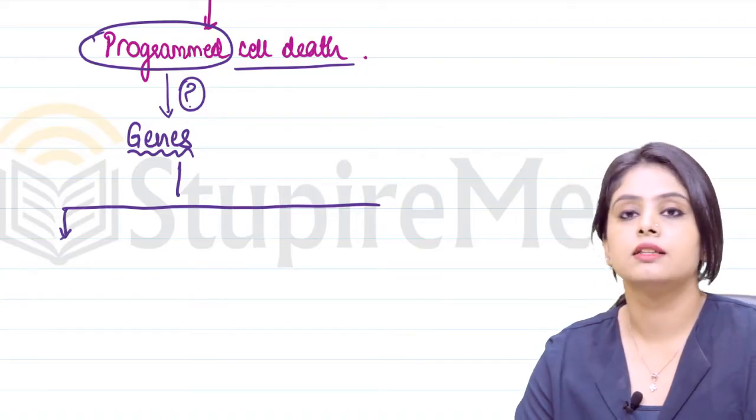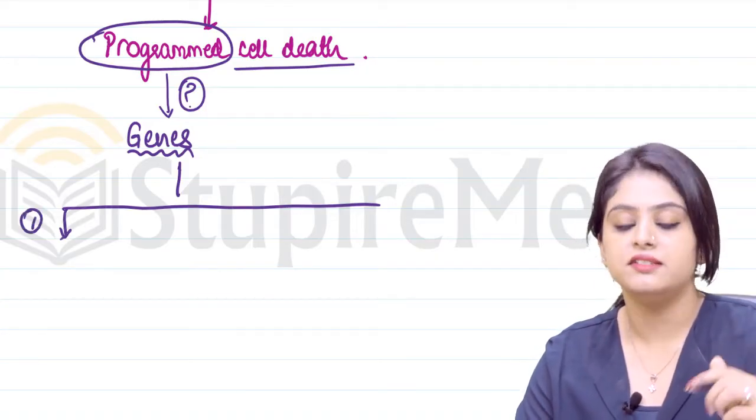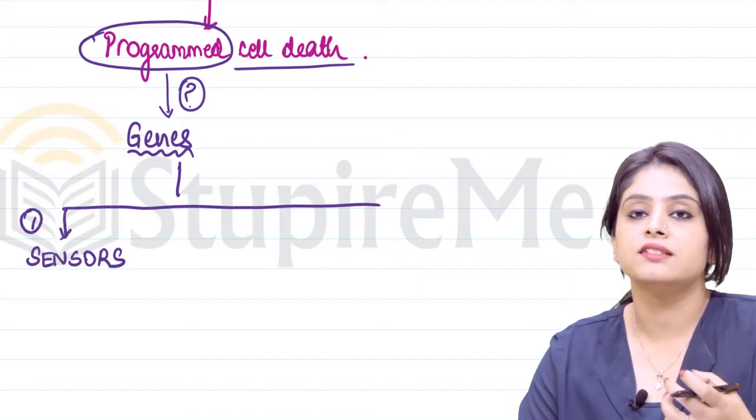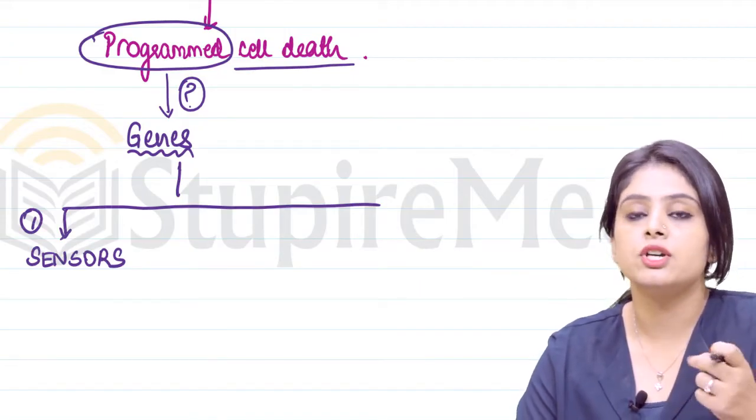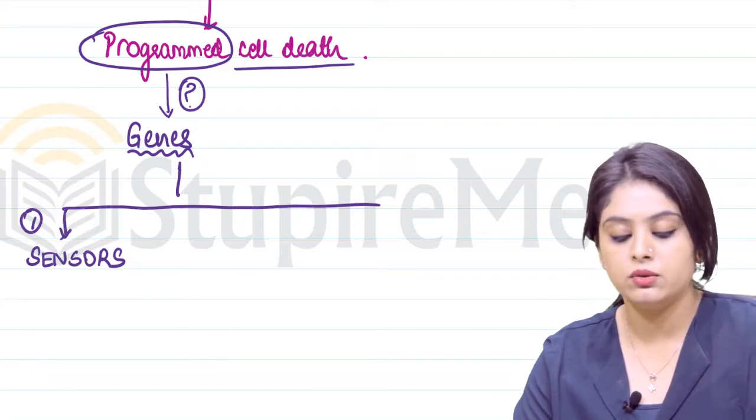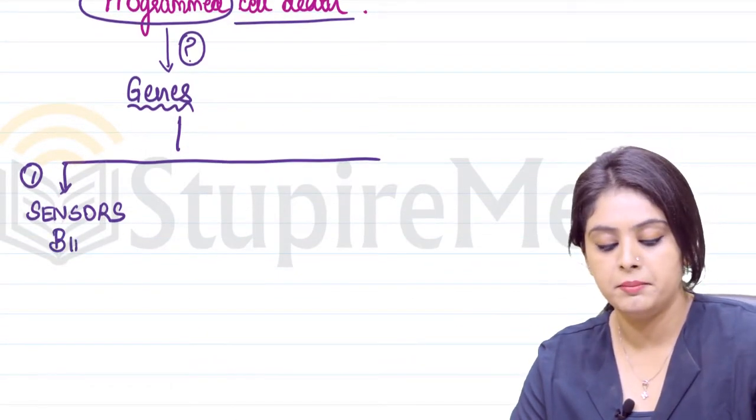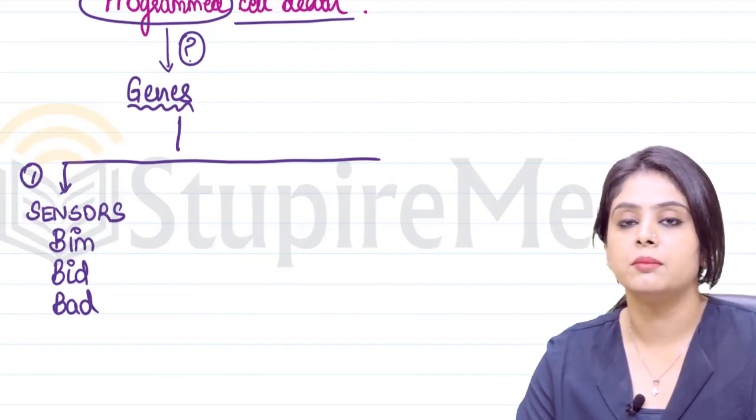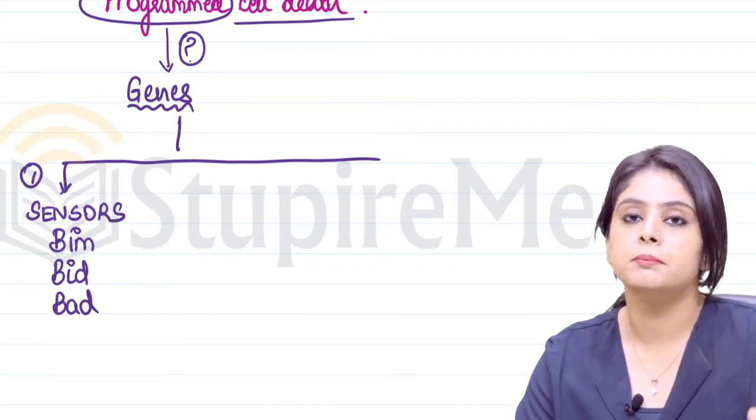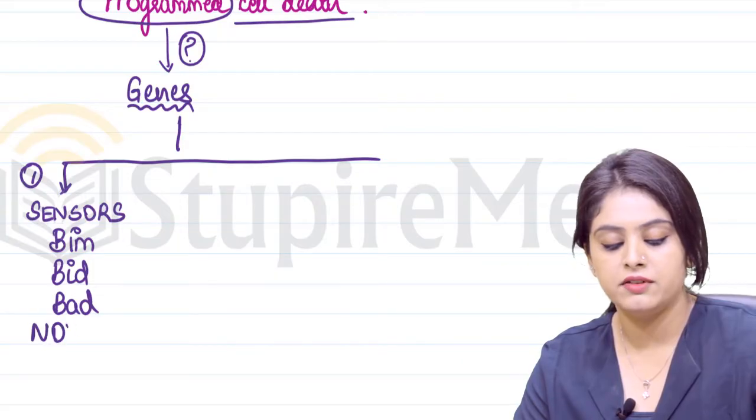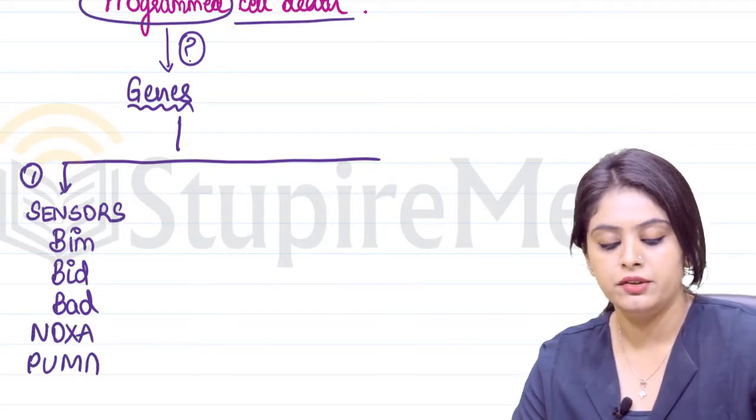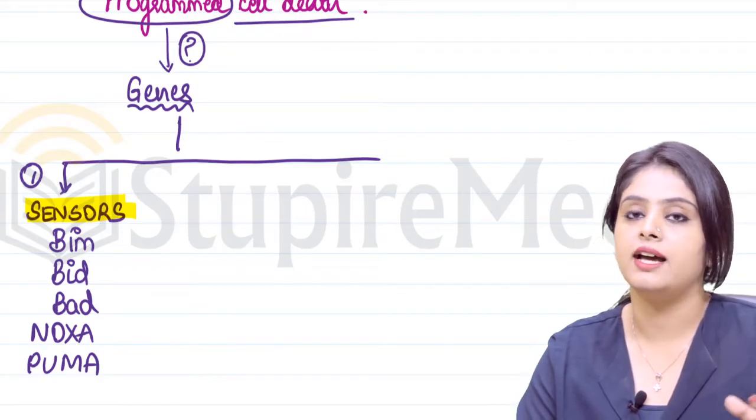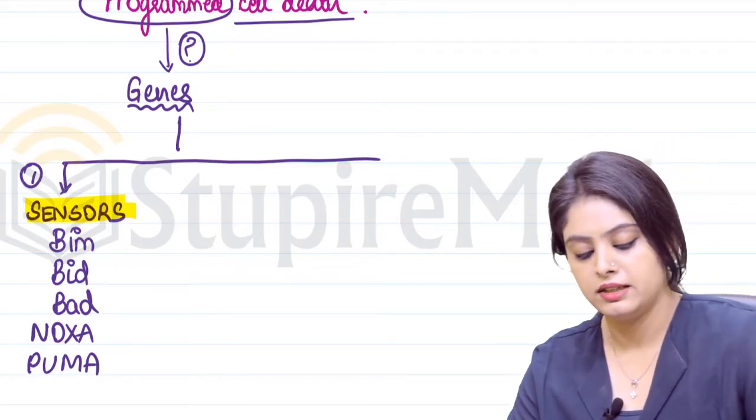What are the genes that are going to control apoptosis? We've divided them into three categories. The first category is the sensors. Whenever the body has any injury or insult, cells have sensors which sense that insult. These include BIM, Bid, Bad, along with NOXA and PUMA.